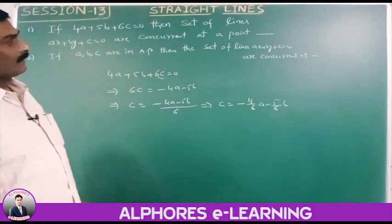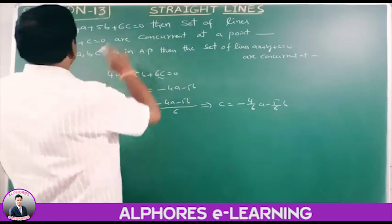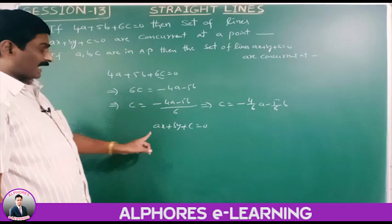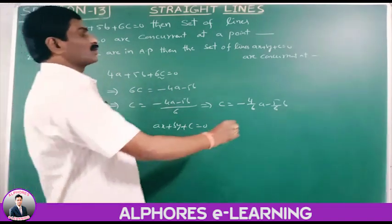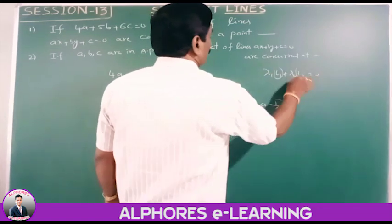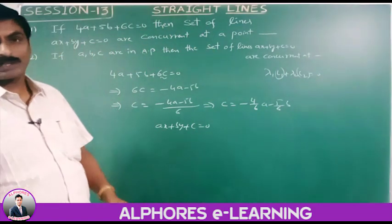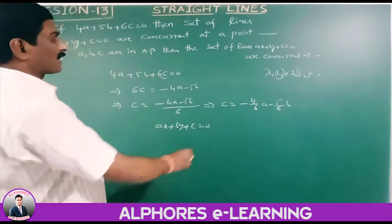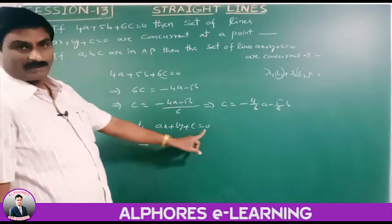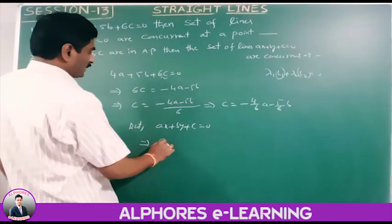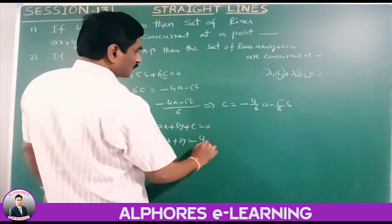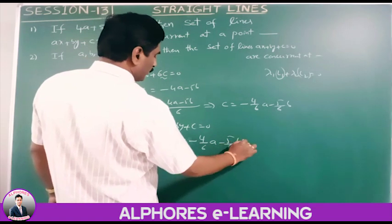Therefore c equals minus 4/6 times a minus 5/6 times b. Substituting into ax plus by plus c equals 0, we get ax plus by plus (minus 4/6 times a minus 5/6 times b) equals 0.